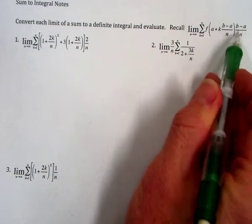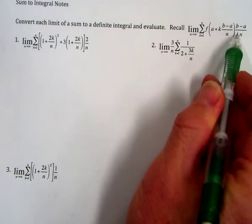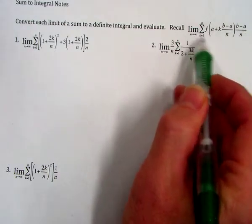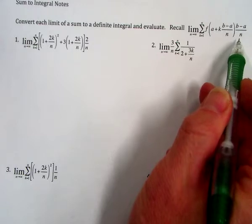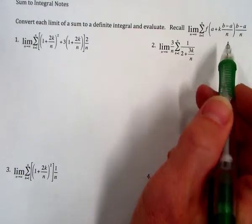We multiply by the width of each rectangle, and as n goes to infinity, the width goes to zero, the number of rectangles goes to infinity, and we get the exact area.